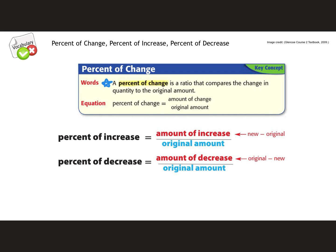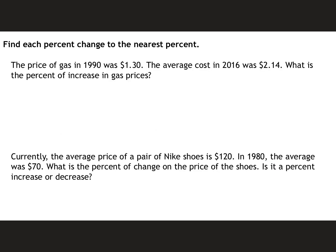Percent of increase is when the amount has gone up and we find that by taking the amount that it's increased and divided by the original. And then percent of decrease is when an amount has decreased over time and we find that by taking the amount that it's decreased and divided by the original.